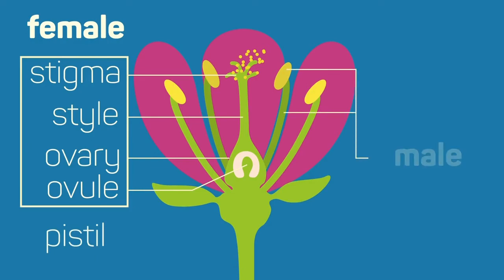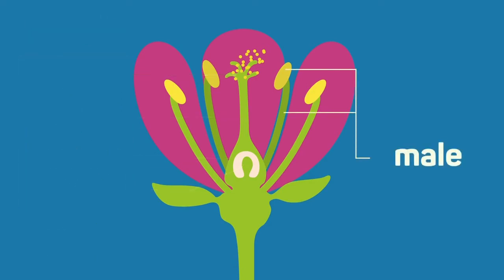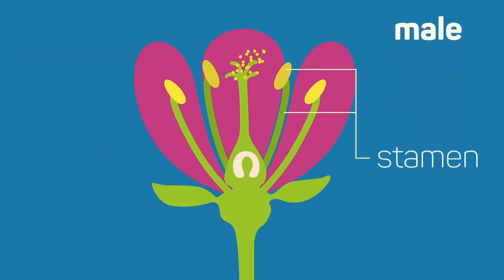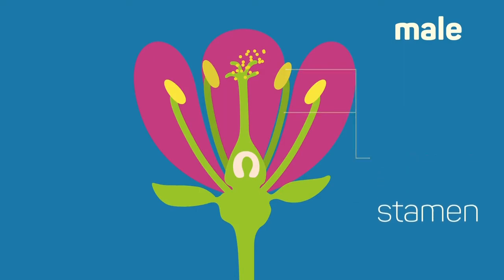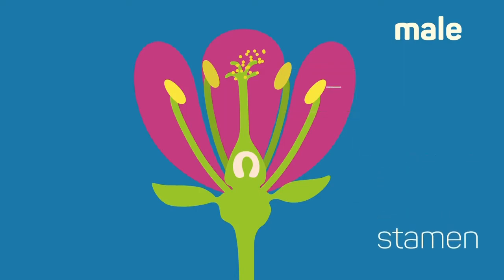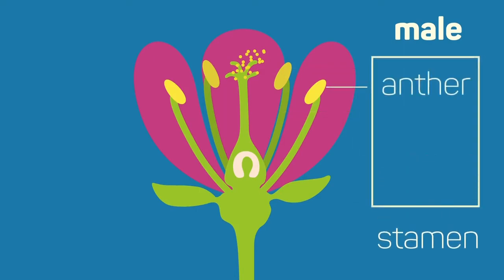The female parts of the plant together are called the pistil. The male part of the flower is the stamen. Saffron, the most expensive spice in the world, is the stamens of crocus flowers. The anther is where pollen is produced and the filament holds the anther up.